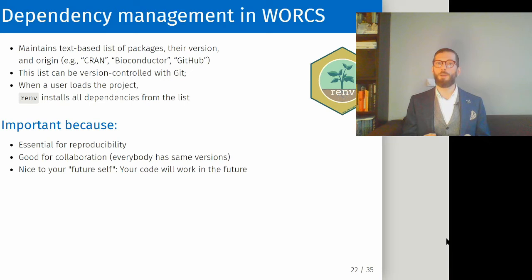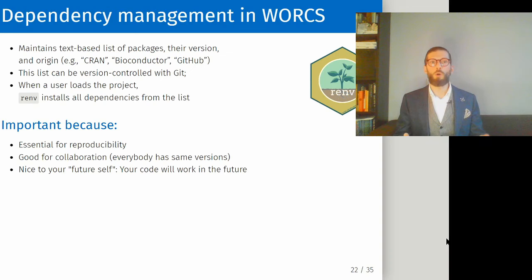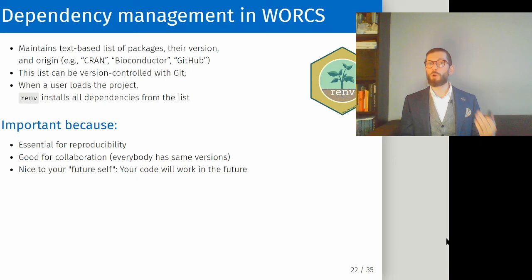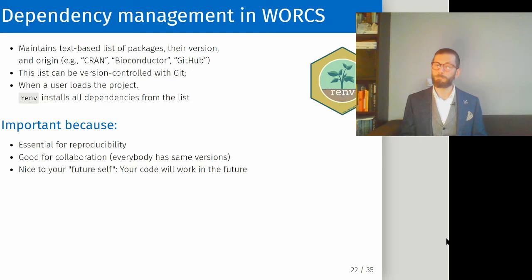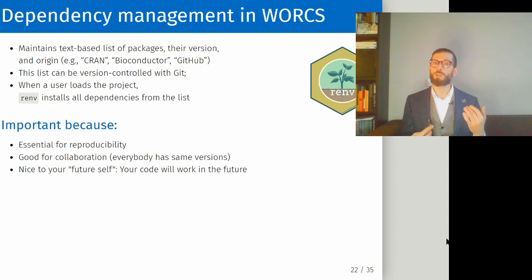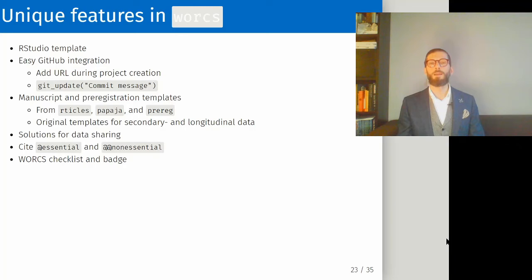To do so, WORCS relies on the package renv. renv maintains a text-based list of all packages you use, their version number, and where you installed them from — for example, from CRAN, Bioconductor, or GitHub. Because it is a text-based list, you can version control it with Git. When a user loads your project, renv automatically installs all packages described in that list. This is essential for reproducibility, and also good for collaboration because everybody working on your project will be using the same package versions. You never run into the problem of one person being unable to run code created by someone else. And using Dependency Management is simply a way to be kind to your future self — you can be safe knowing that when you open your project two years down the line, everything will work as predicted.